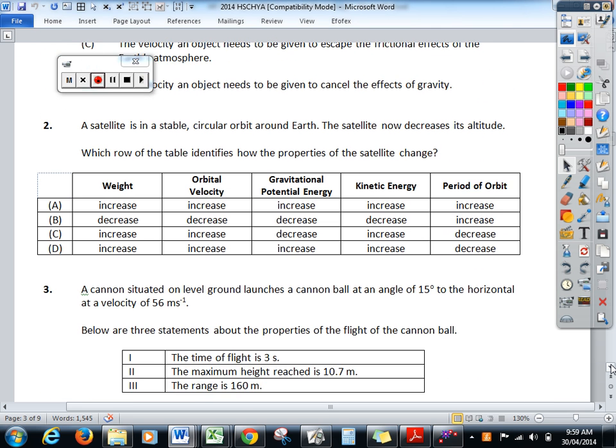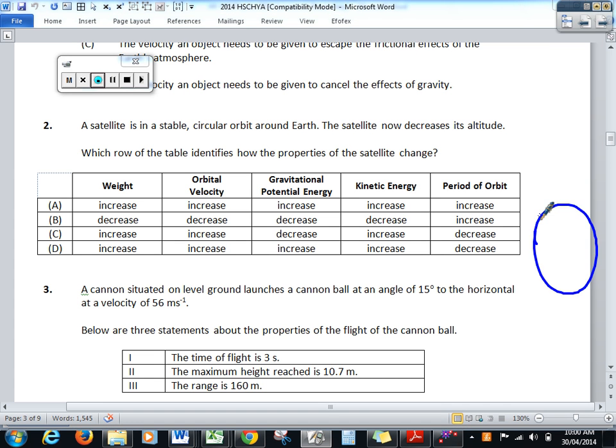This is the one that we require a lot of thought about. It's no longer just got a few variables. We've got five things that we have to look at. But some of them you'll have a look and go, oh yes, I can easily determine these. So a satellite is in a stable circular orbit around the Earth. The satellite right now comes closer to the Earth, decreases its altitude. Which row of the table identifies the properties which will change and how they change. So here is our Earth. There is our satellite. And now it's down here at a different orbit.